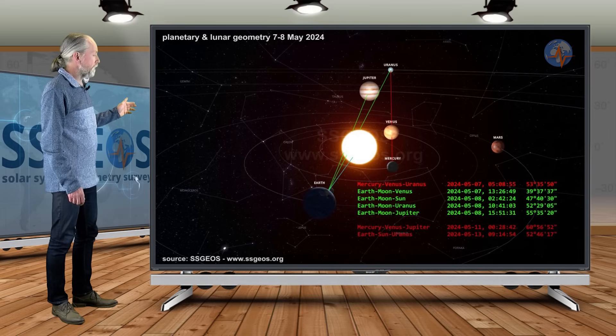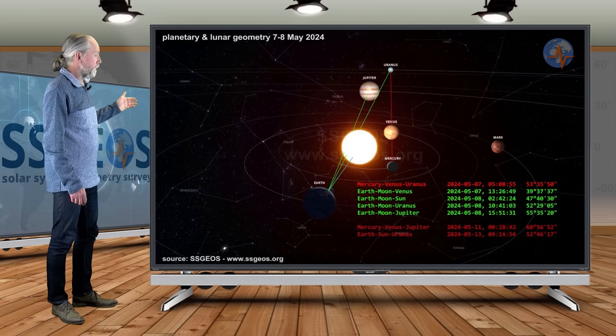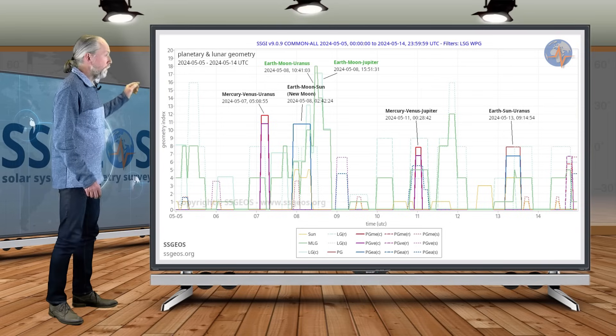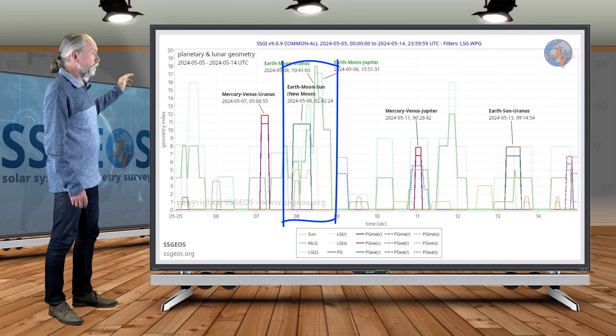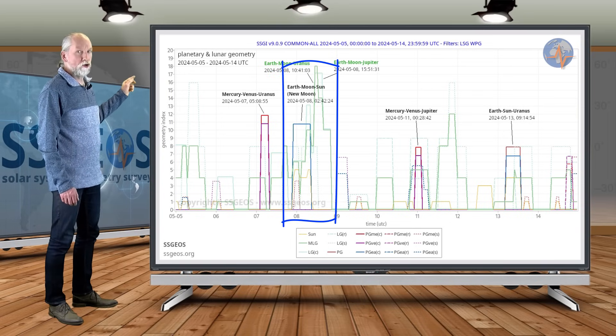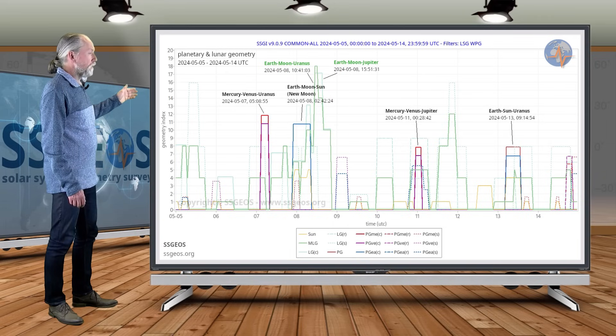These are lunar conjunctions with Venus, Uranus, and Jupiter as well. On the SGI graph we see these lunar peaks—the lunar conjunctions Earth-Moon-Uranus and Earth-Moon-Jupiter—and they occur on the eighth.